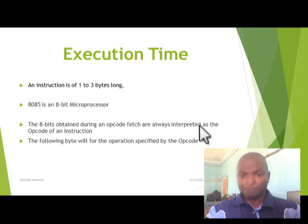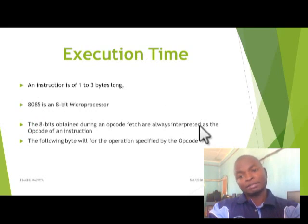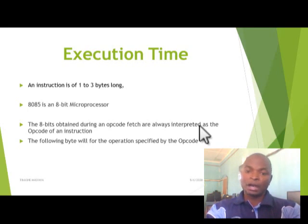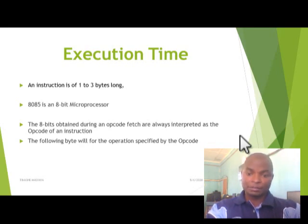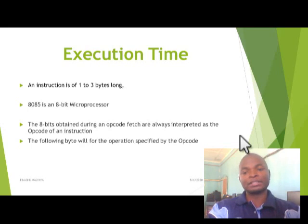The 8085 is an 8-bit processor. The first 8 bits obtained during the opcode fetch are interpreted as the opcode of an instruction. The following bytes specify the operand as specified by the opcode. After fetching the instruction, that instruction is decoded. After decoding the instruction, the next steps are followed according to that operation code — the opcode.